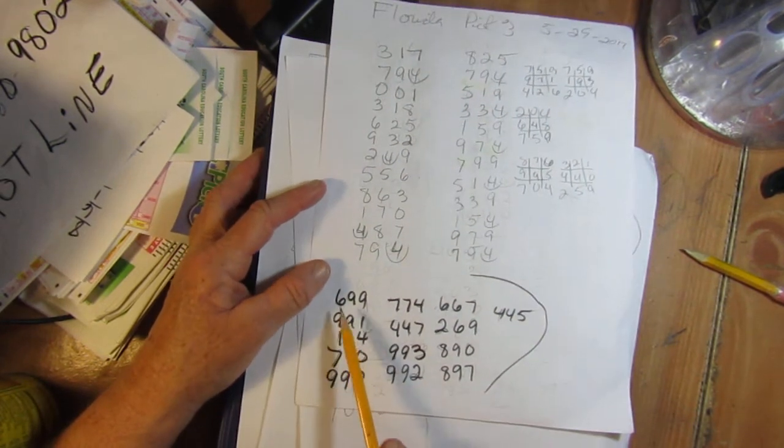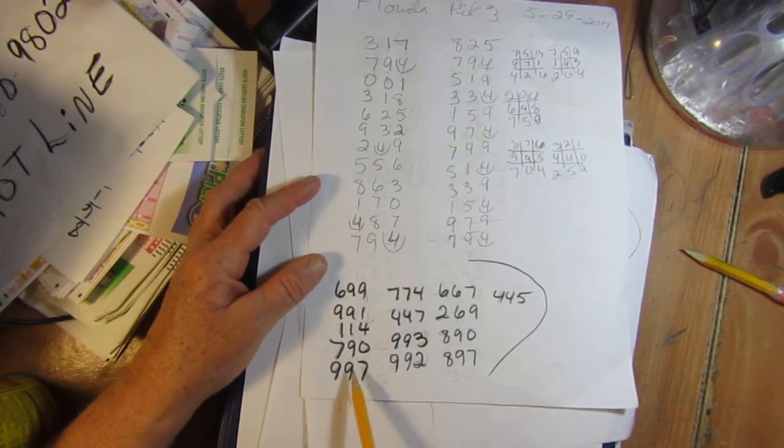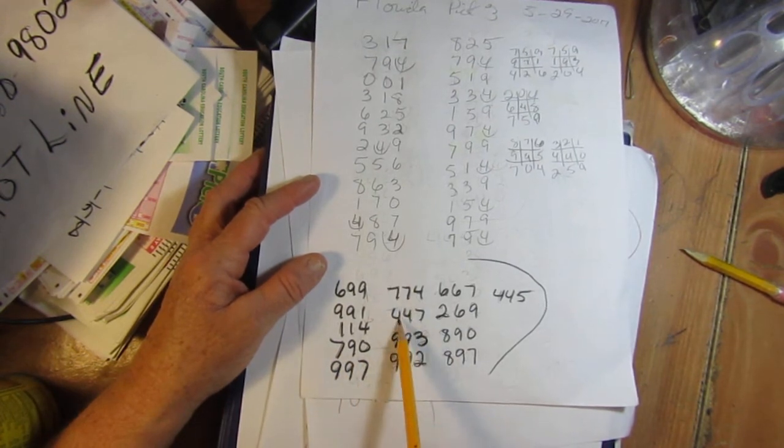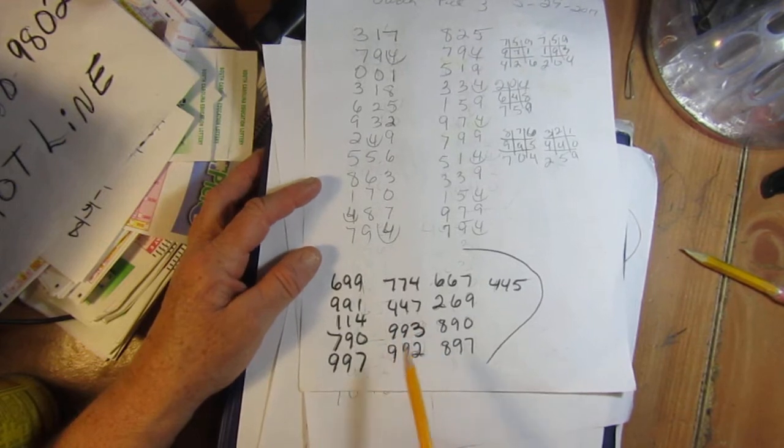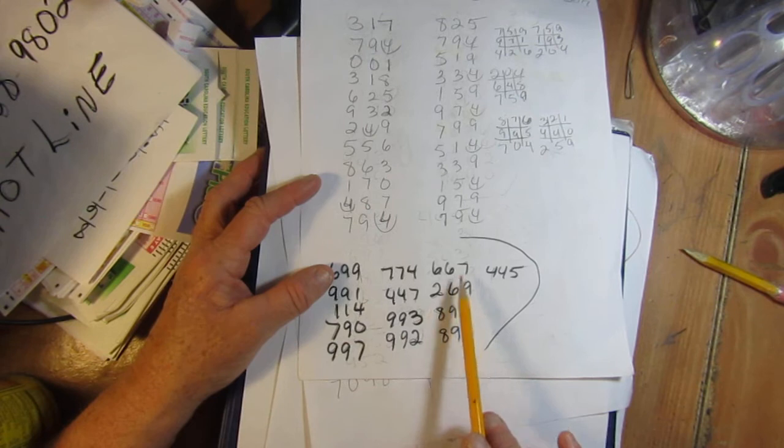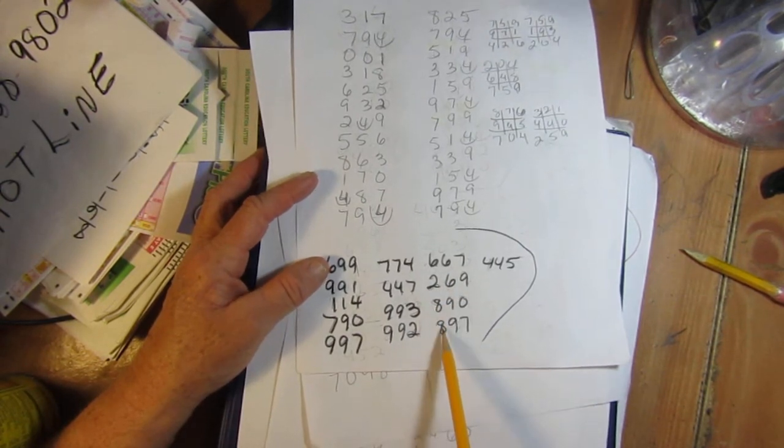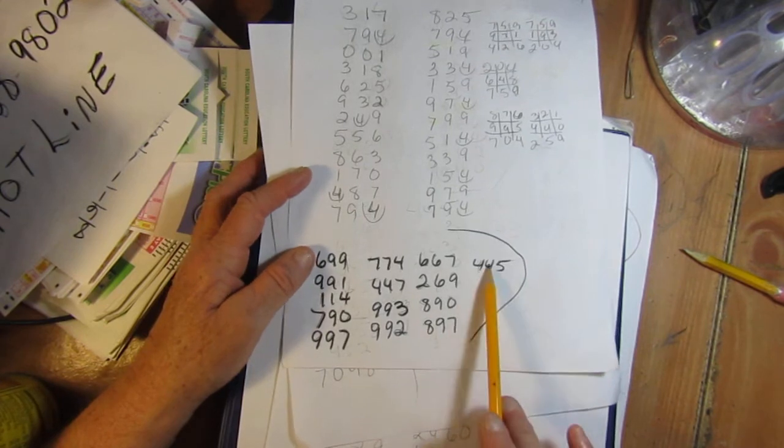699, 991, 114, 790, 997, 774, 447, 993. Yeah it could possibly be a double night. 992, 667, 269, 890, 897 and 445.